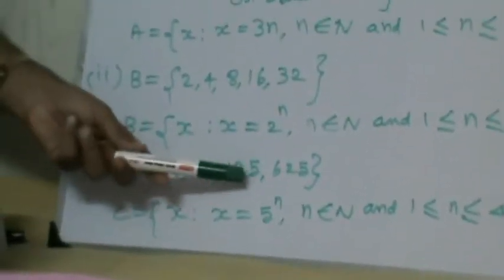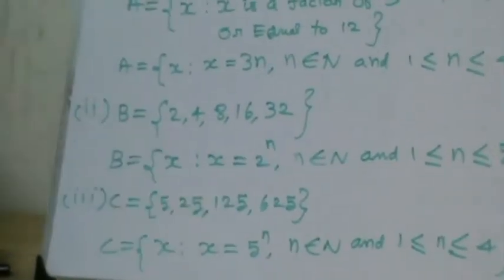Sum number 3. C is equal to 5, 25, 125, 625.